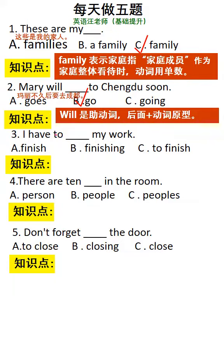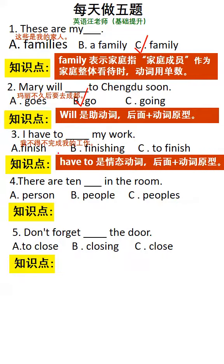第三题：I have to finish my work. 我不得不完成我的工作。Have to是情态动词，情态动词后面加动词原形，因此选择A选项。